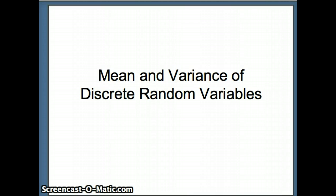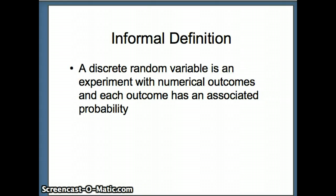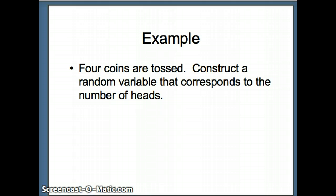This lesson examines the mean and variance of discrete random variables. A random variable will have numerical outcomes and each outcome will have an associated probability. Our example will be tossing 4 coins and counting heads.